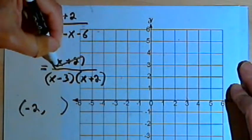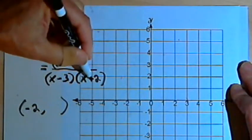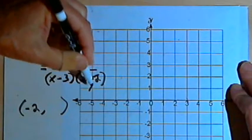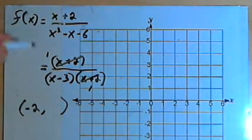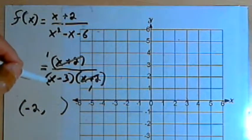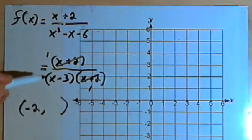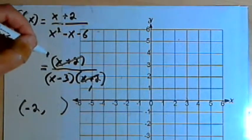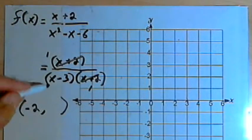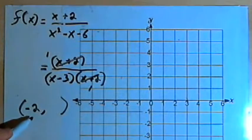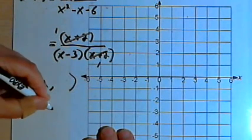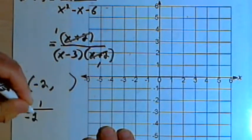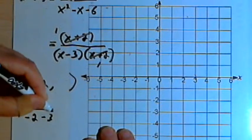We'll factor out that x plus 2. We'll divide both the numerator and the denominator by x plus 2. Now all I've got is 1 over x minus 3. And I want to find out what the y-value is. So what I'm going to do is take this 1 over x minus 3 and replace the x with that negative 2. So I'll have 1 over negative 2 minus 3.